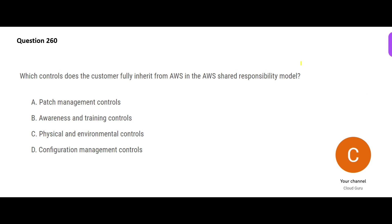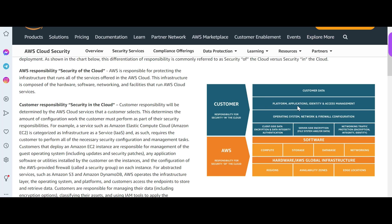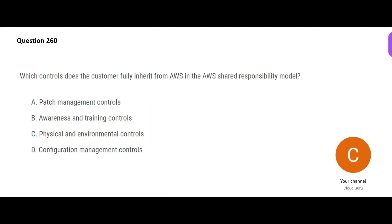The question asks: which controls does AWS fully inherit in the shared responsibility model — meaning the customer fully inherits from AWS? In the shared responsibility model, certain things you as a customer will do — marked in blue here — and certain things AWS will do — marked in orange or amber. 'Fully inherits' means AWS does it and you as a customer simply rely on that.